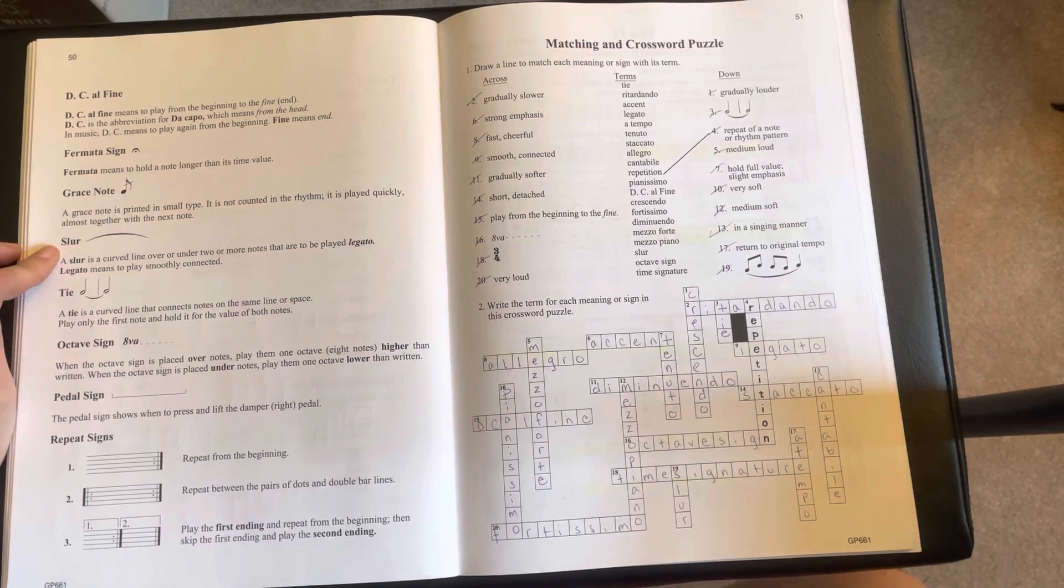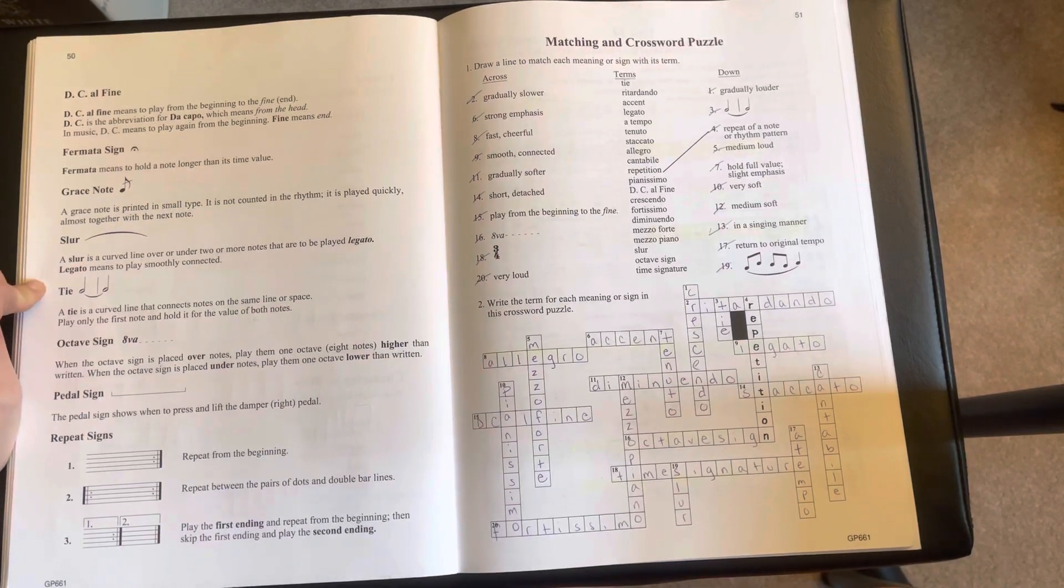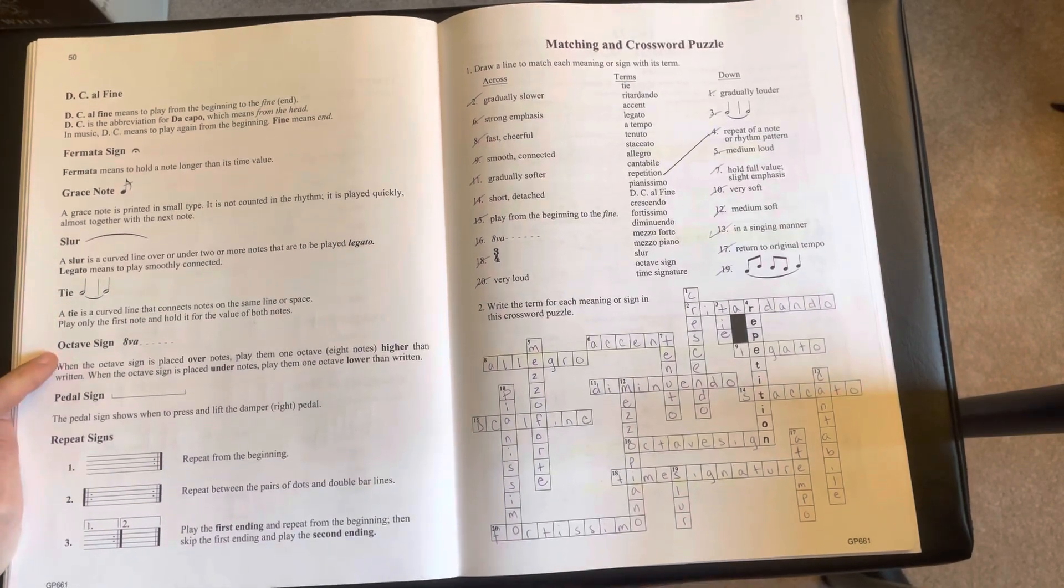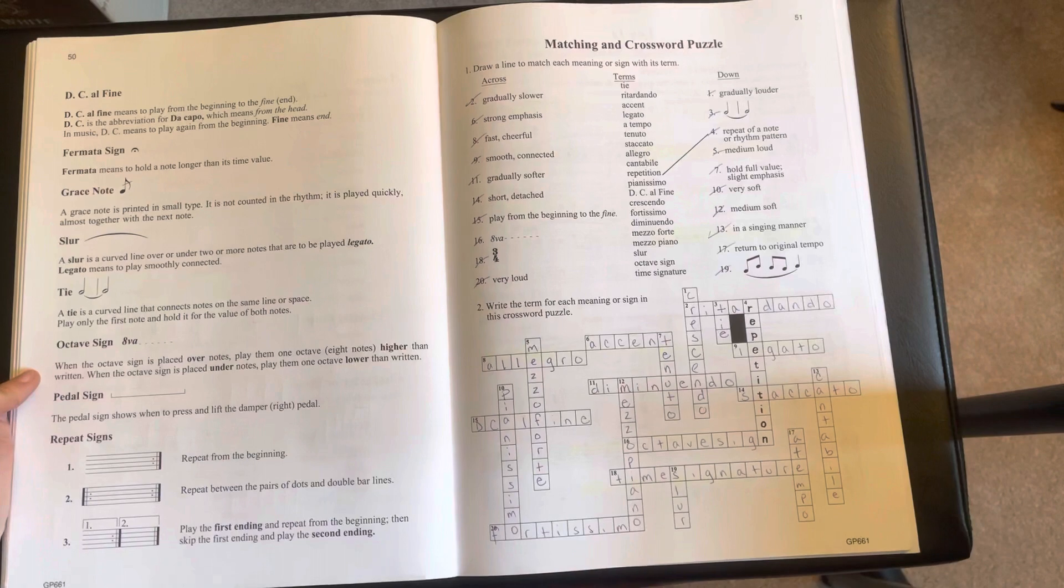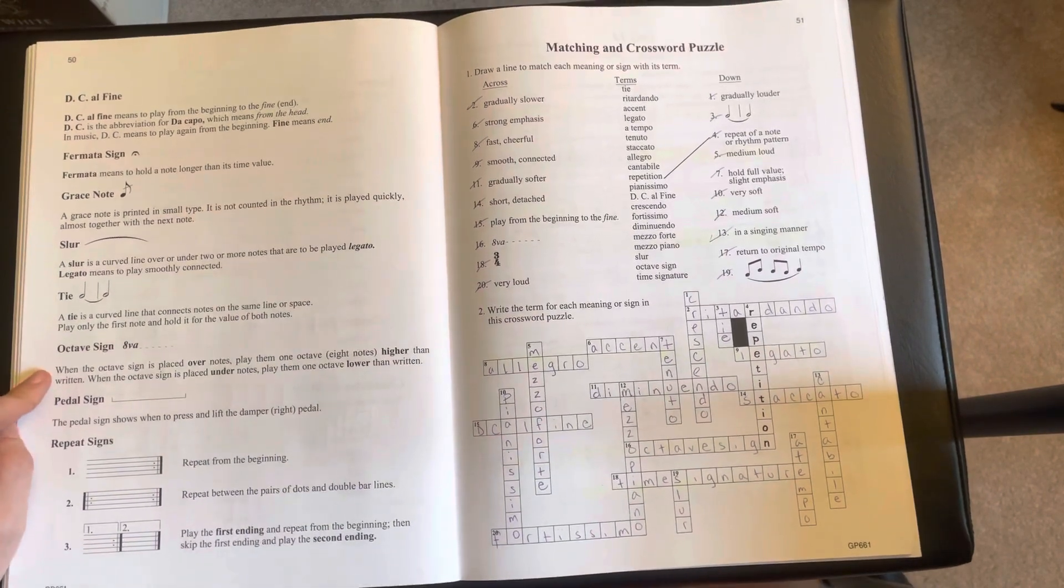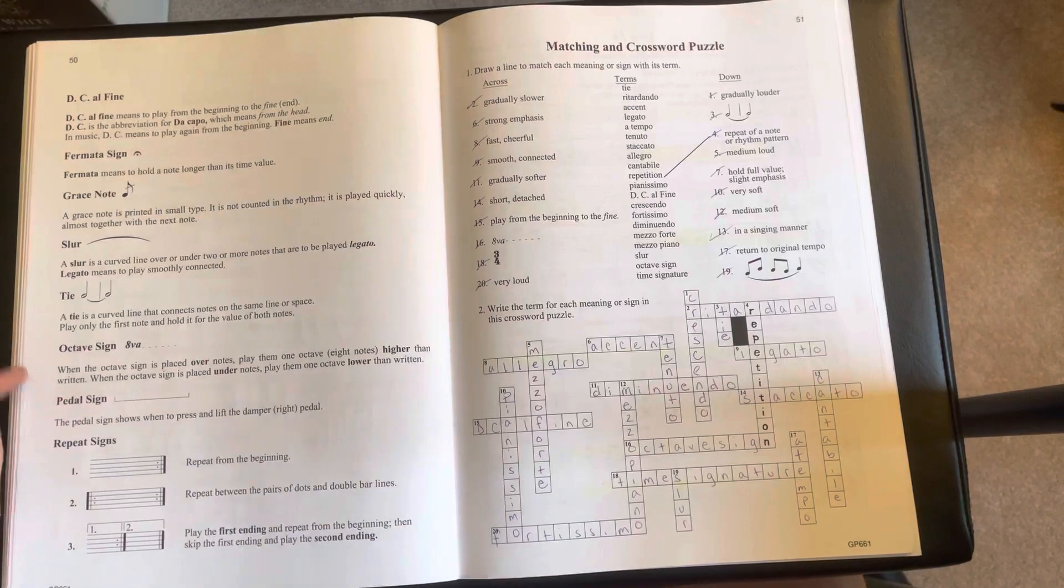The slur means to play legato. Tie means to connect the two notes and add the values together. The octave sign, if it's placed over the notes, play it an octave higher. If it's placed under the notes, play the notes an octave lower than written.